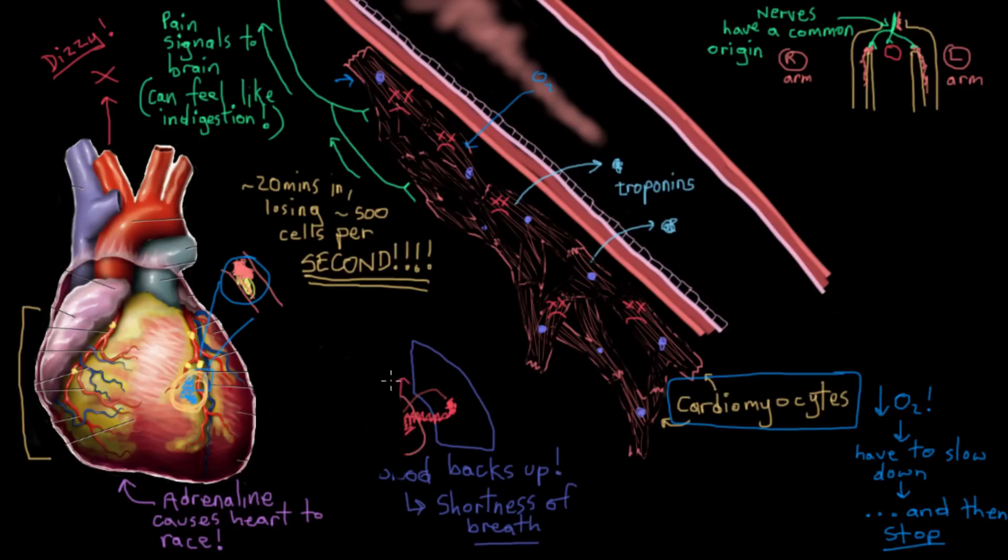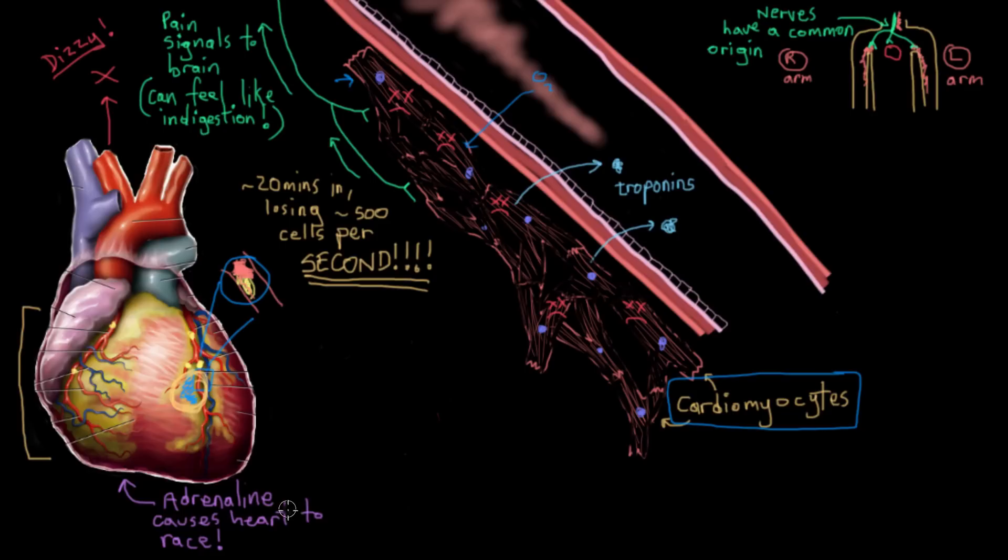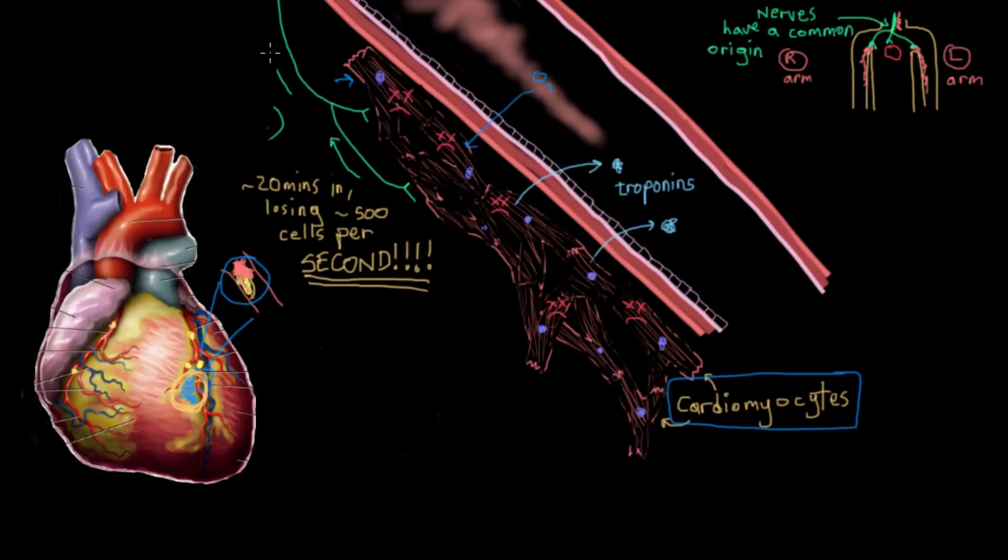And they're not like your average skin cell or your hair. They can't actually be replaced. So once you lose these cardiomyocytes, that's it. Your heart will not beat normally again. So you really want to limit the amount of cardiomyocyte loss that happens. So that's the physiology behind what's happening in a myocardial infarct.